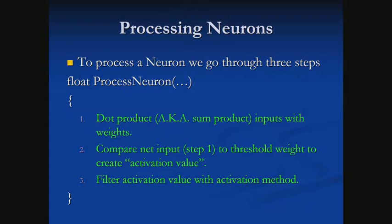Step one — which we already talked about — is the weighted product, or dot product, or sum product. It just means we take each input times its weight and add all of those together. Each unique input times its weight, all summed — that's step one.